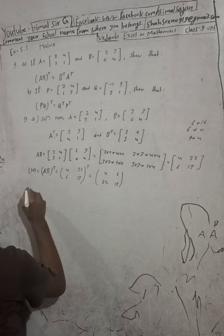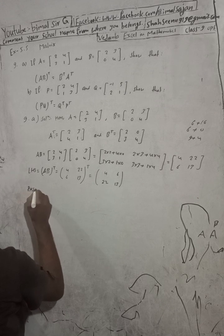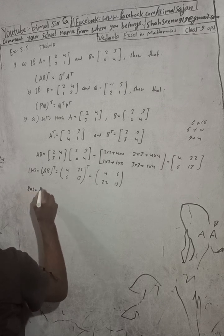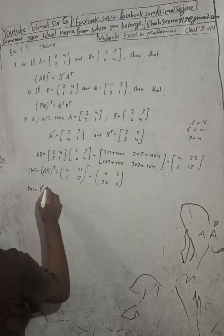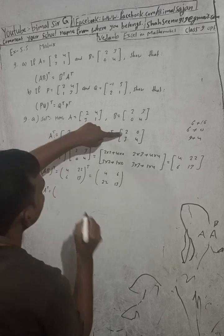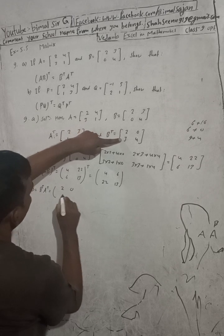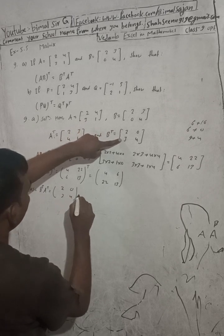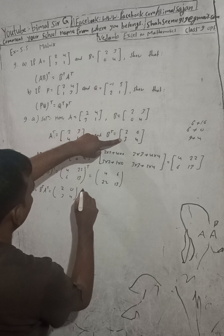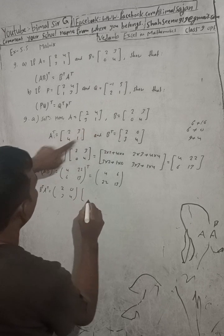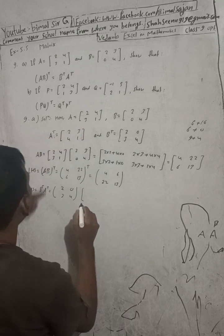Now RHS: B transpose into A transpose. B transpose is [2,0; 3,4] and A transpose is [2,3; 4,1]. Now multiply these two matrices.